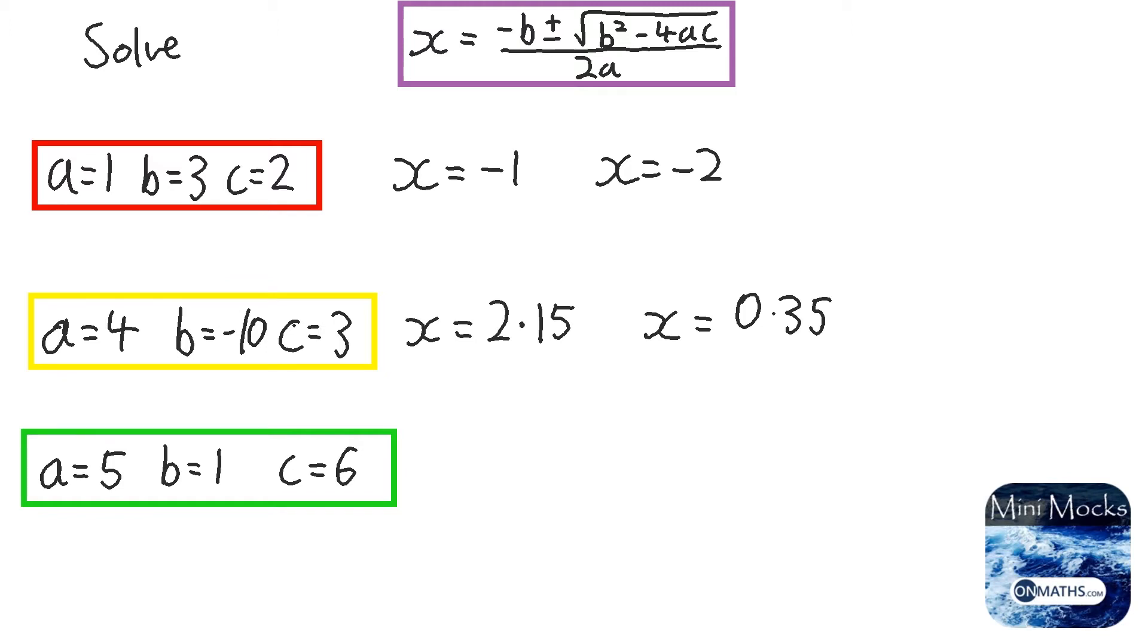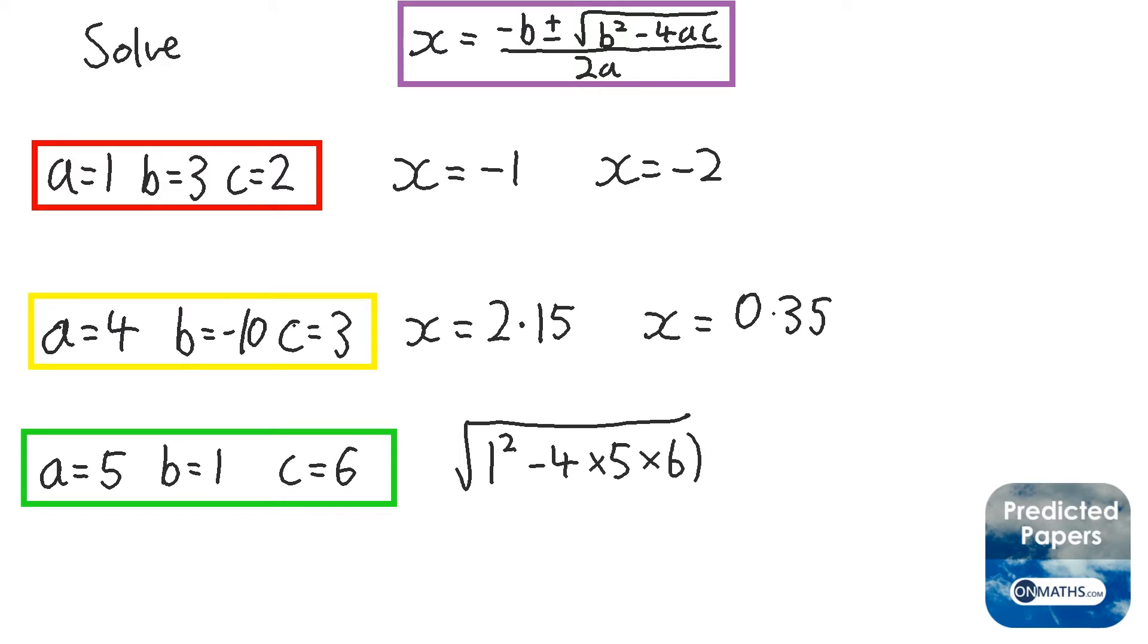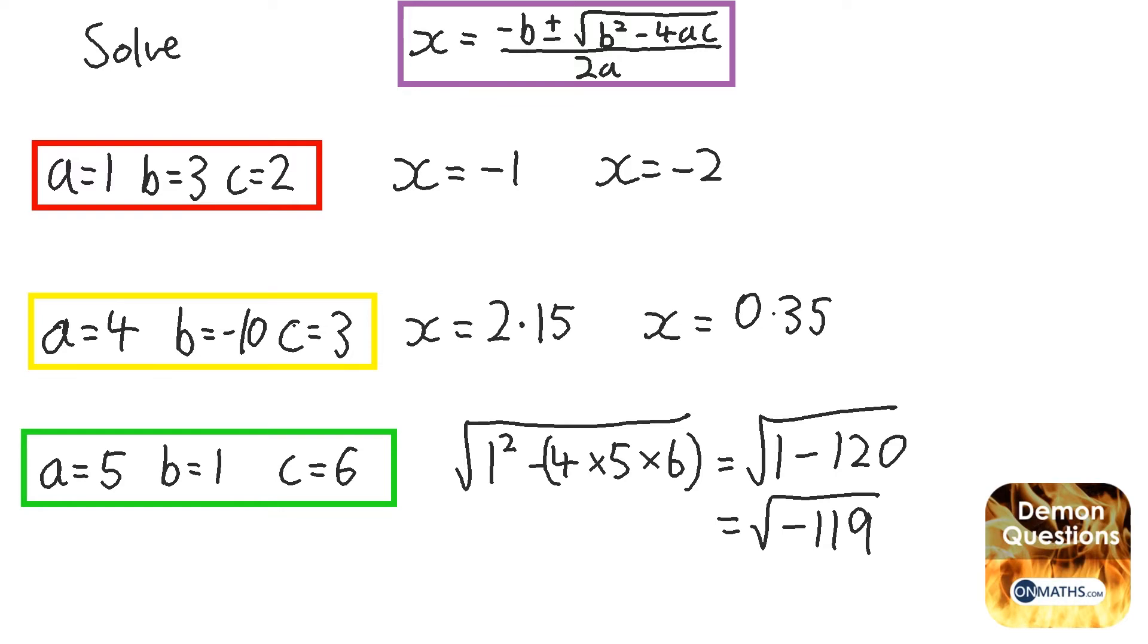So if you are on the calculator exam and it asks you to do it to two decimal places or three significant figures, that is an alarm bell ringing that you're going to be probably using the quadratic formula. You're not given the quadratic formula, which is shown at the top of this video. You will have to learn it. Now, this last one is a bit of a weird one. I'm just going to highlight what we're typing in to the calculator inside the bracket. We're typing in b squared, which is 1 squared, minus 4 times a, which is 5, times c, which is 6.